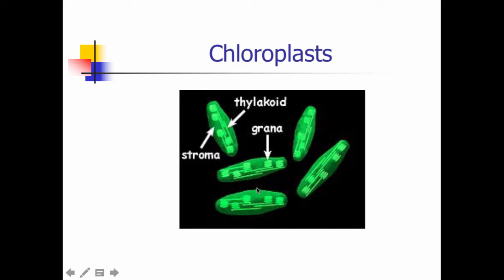And so when you actually look at a chloroplast, it looks like an oval shape that has stacks of coins in it. And these stacks of coins are what we call the grana, and each one is actually called a thylakoid.